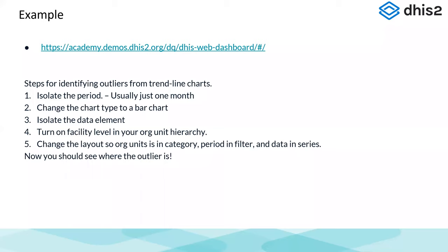Let's do a quick overview of how to identify these outliers on a standard dashboard and isolate the actual outlier. We have several steps: first, isolate the period — drill into one month. Then change the chart type to a bar chart. Then isolate the data element. Then isolate the facility level to see where the data is coming from. Finally, change the layout so that org units is a category, periods in filter, and data in series.